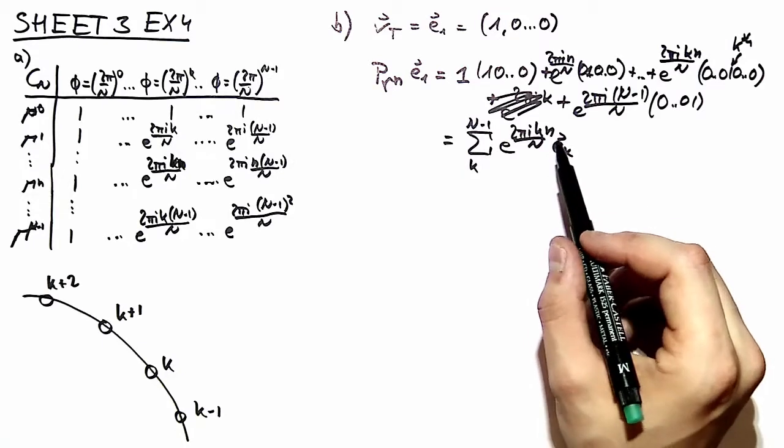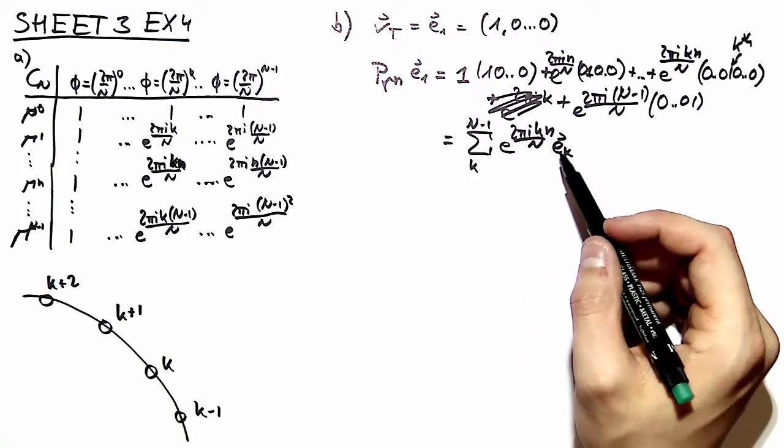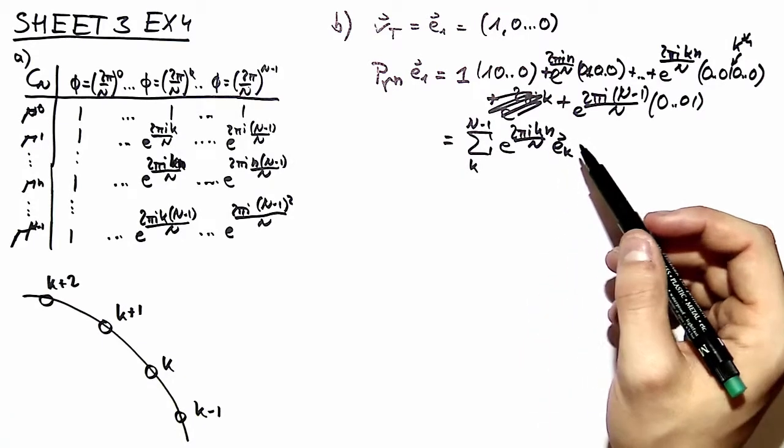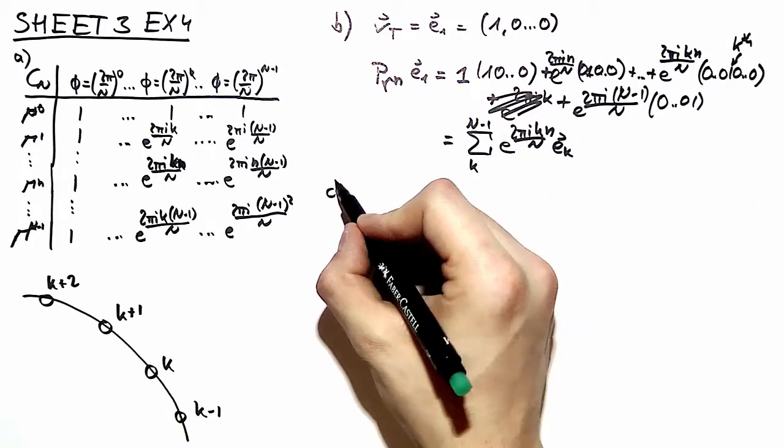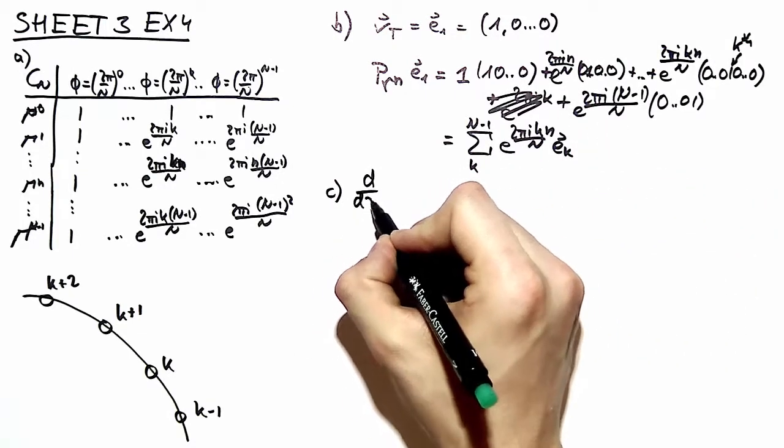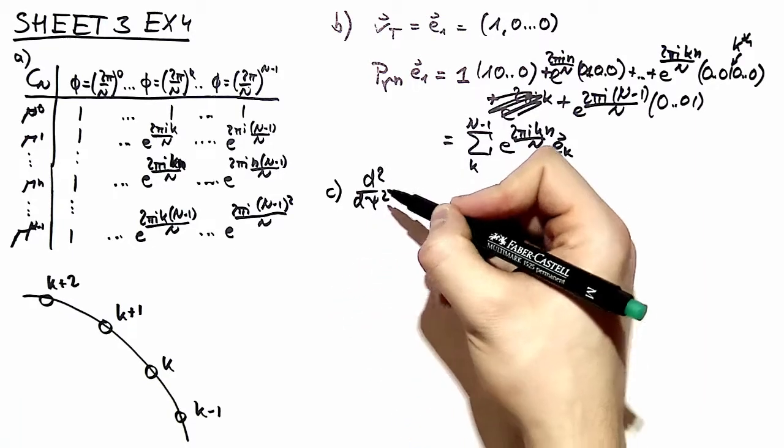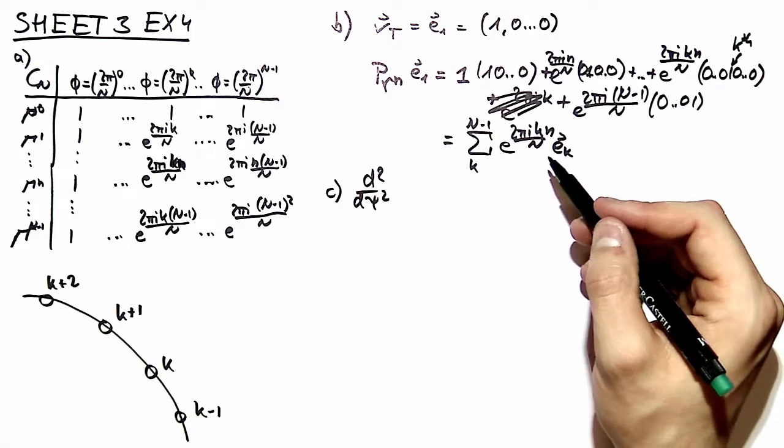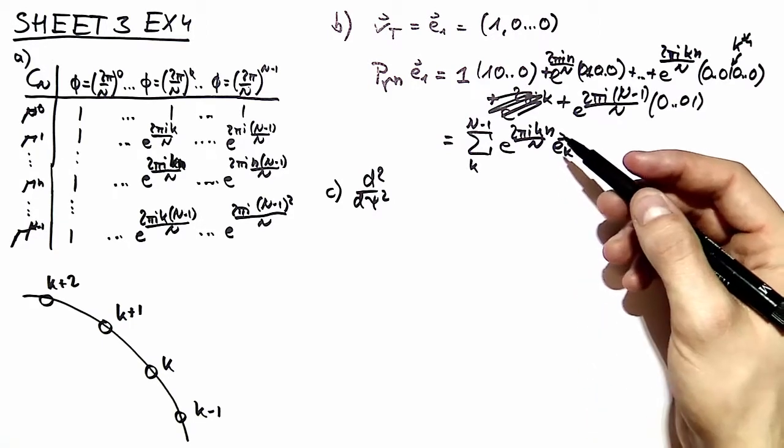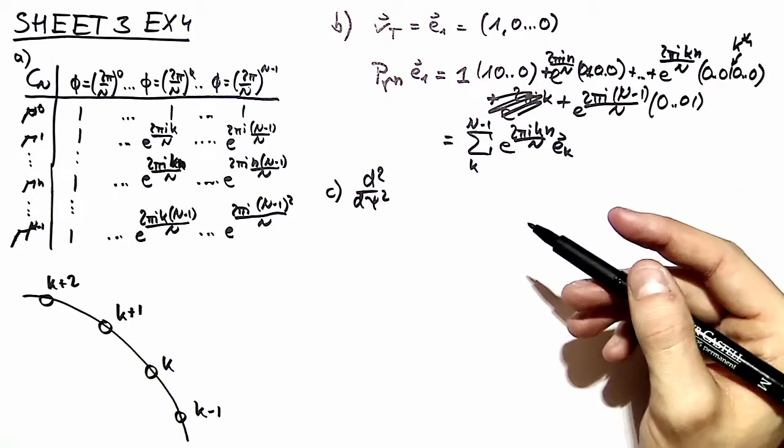This is the basis for our projector and we can move on and find a matrix for the operator, for the differential operator d squared over d phi squared according to that representation and solve an eigenvalue problem. We do that just with the same answer as from the lecture.